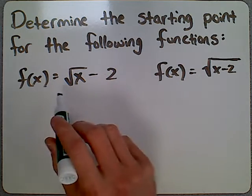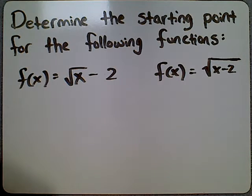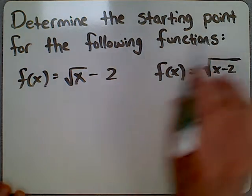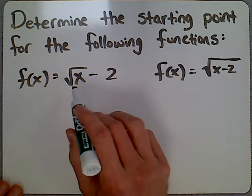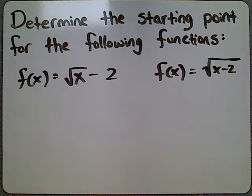What you want to do here is just understand that the smallest number that can come from a square root is 0. You can't take the square root of a number and get a negative number. So when we're talking about a starting point, we're talking about what number can we substitute for x here and get a 0 to come out of the radical.